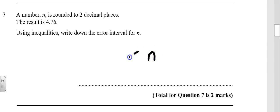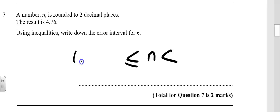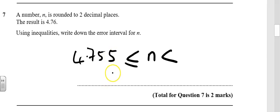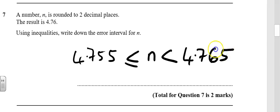So n is in the middle — it's a bounds question. If it's rounded to two decimal places, the lowest this could possibly be is 4.755. Any lower than that would go down to 4.75. And then the upper one — notice this isn't equal to — so you can go to 4.765. Although that value would technically round up, but it doesn't matter because we've got our inequality there.